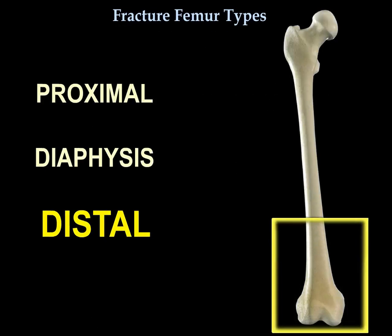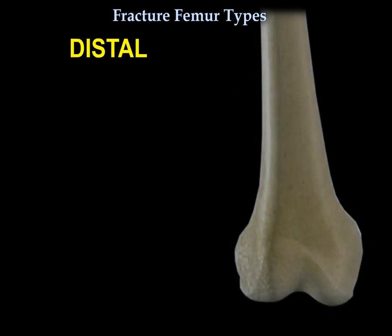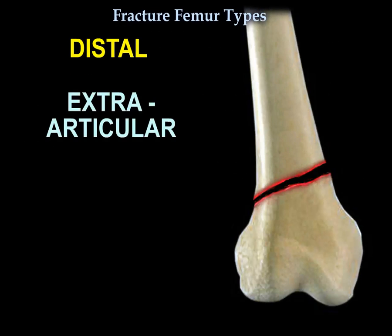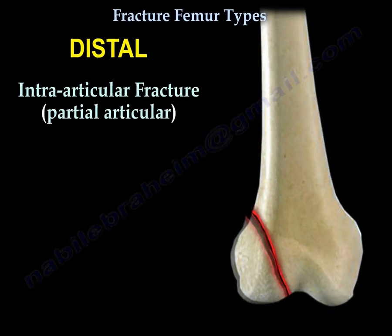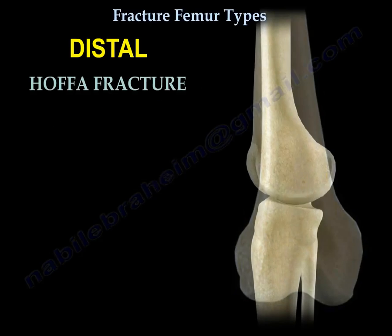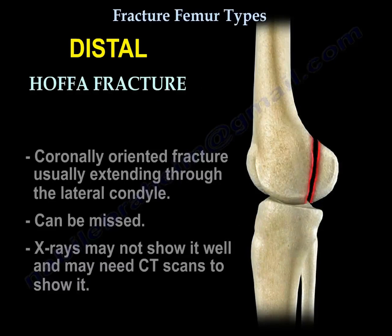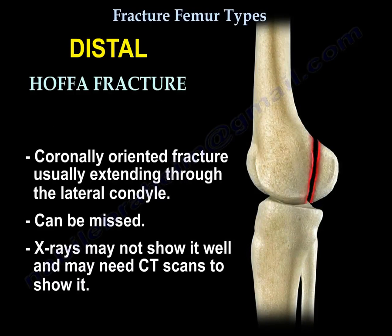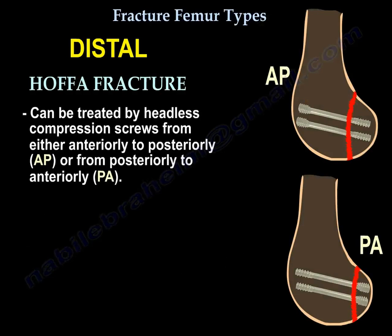Now for distal femur fractures: the fracture can be extra-articular, or intra-articular — either partial articular like a condyle fracture, or a Hoffa fracture, which is a coronally oriented fracture that usually extends through the lateral condyle. It can be missed on X-rays and may require a CT scan.